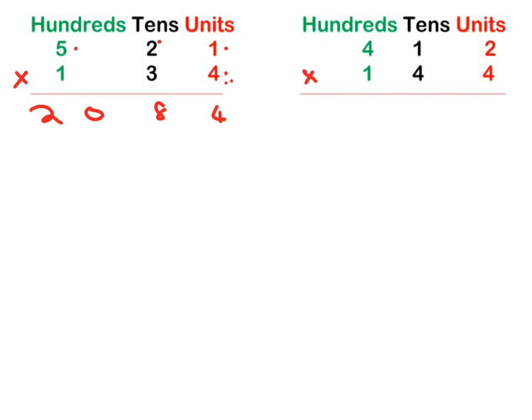Now remember we're going on to our tens. So what do we do when we do our tens? We put a zero like we know. 3 times 1 is 3, 3 times 2 is 6, 3 times 5 is 15. Okay, done with our tens column.